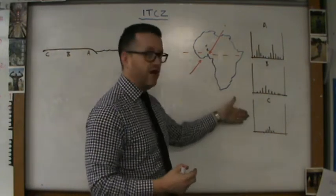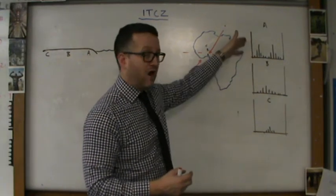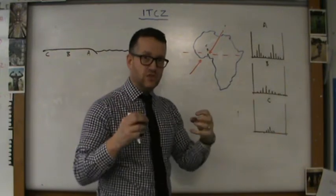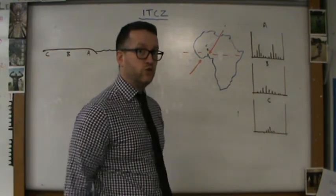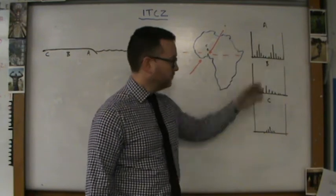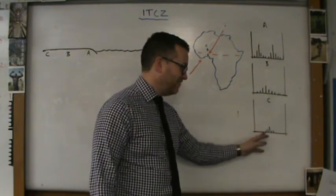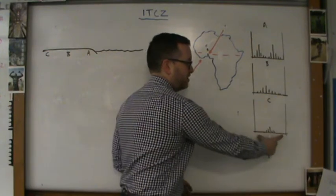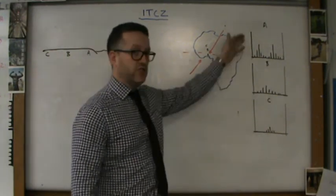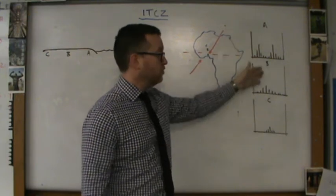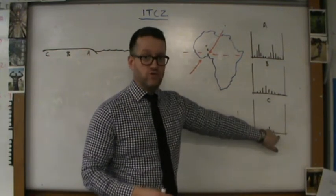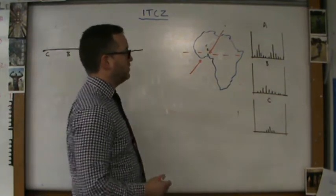A, B, and C will have climate graphs added to them. A's climate graph will show large bars of rainfall. Most importantly, there are two big seasons of rainfall in the year for location A. Location B has one rainy season and it's less rainy than location A. Location C has very little rain altogether and most importantly has periods of drought on either side of its very short rainy season.